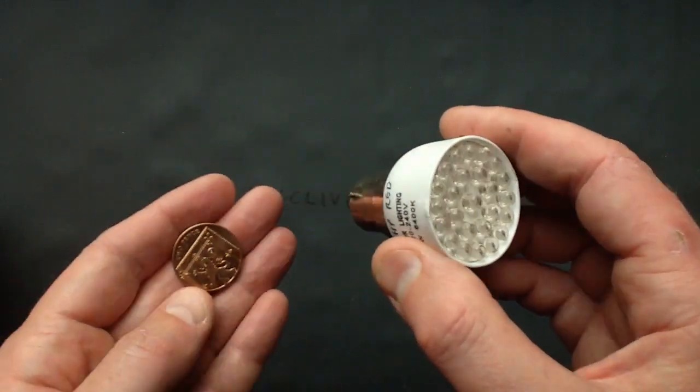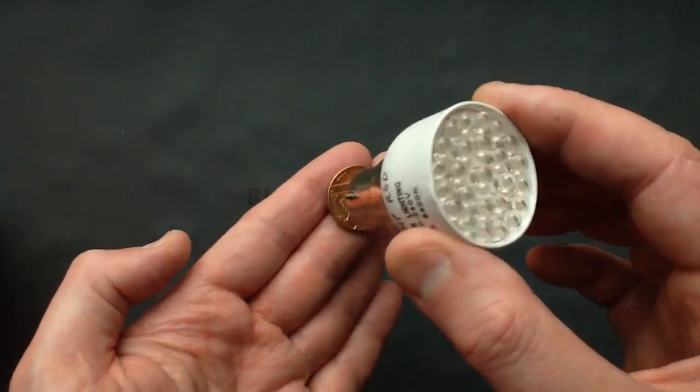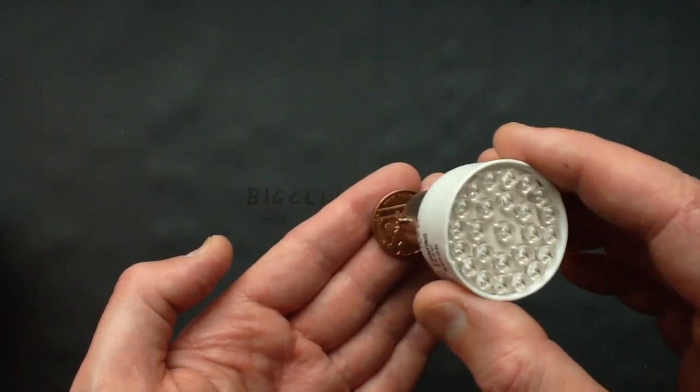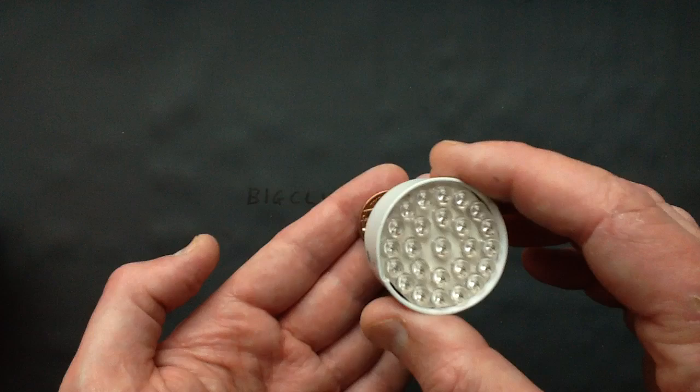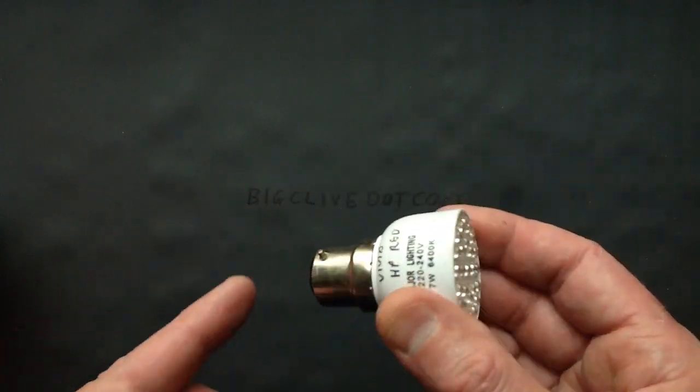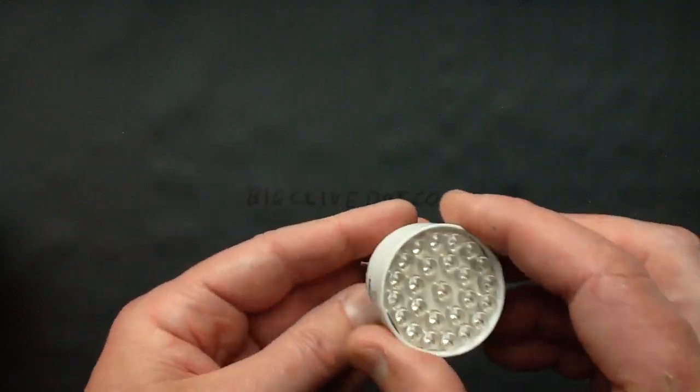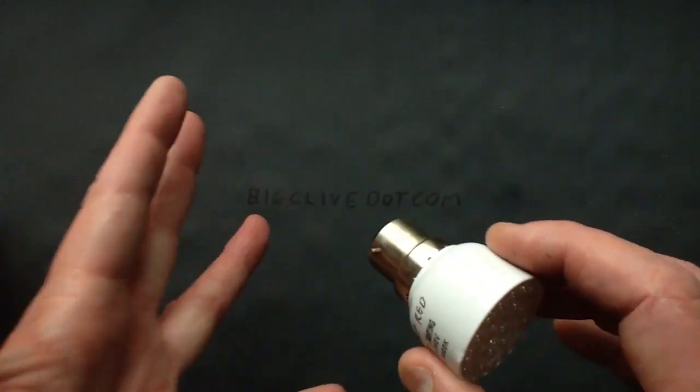I thought it would be quite interesting to do a teardown on one of my own homemade lamps. Here's a little interesting thing. Watch what happens when I put the base of the lamp across this 2 pence piece. Did you see that brief flash that came from the LEDs? That's why you have to use a discharge resistor across the capacitor, because otherwise when you touch those pins or touch the base of the lamp after it's been unplugged, you get a bit of a tingle.